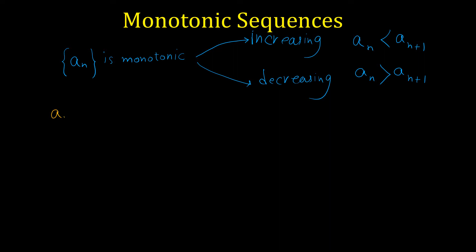For example, consider the sequence 1 over n. The first term is 1, the second term is 1/2, the third term is 1/3, the fourth term is 1/4, and so on. By looking at the terms of this sequence it is obvious that this sequence is decreasing, and so it is a monotonic sequence. But how can we prove that this is a decreasing sequence?